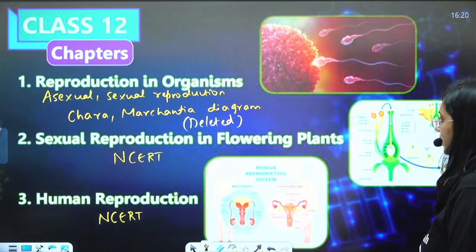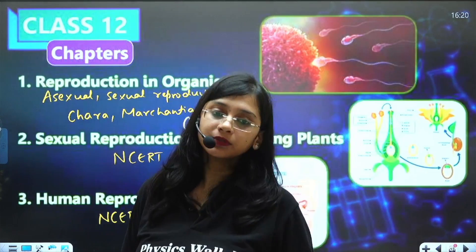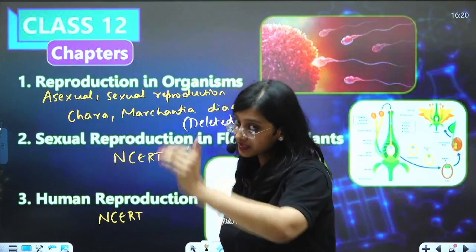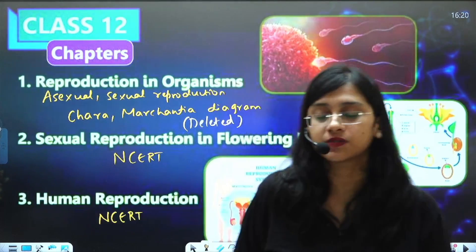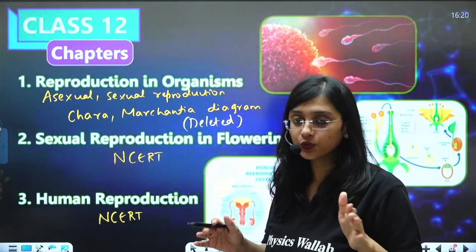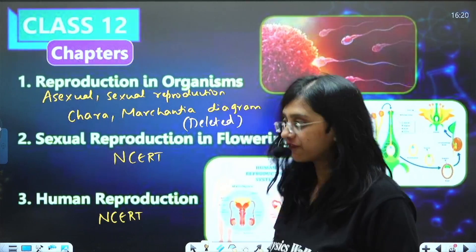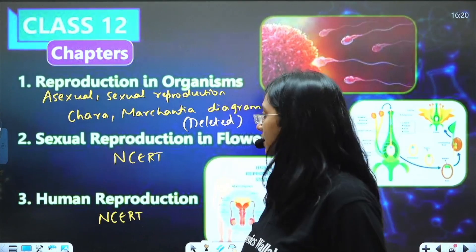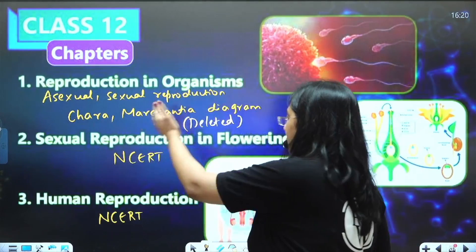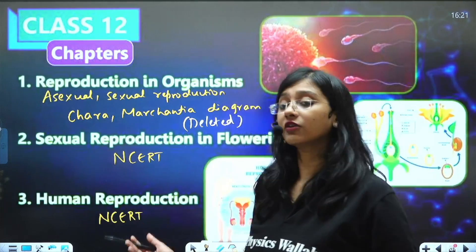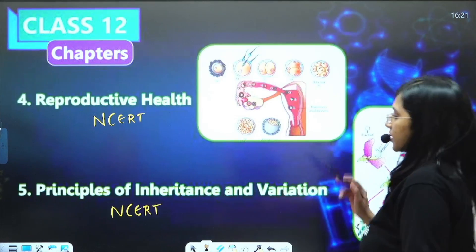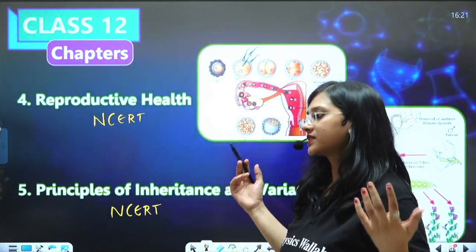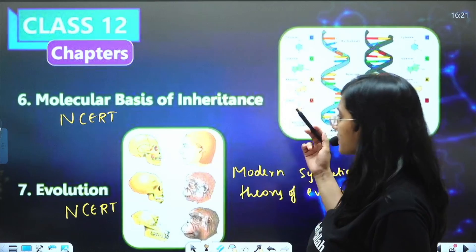Chemical Coordination and Integration — any NCERT works. Moving to Class 12 chapters: Reproduction in Organisms is completely deleted, but study it for understanding other chapters — it includes asexual and sexual reproduction, estrus cycle, and diagrams to mark and share. Sexual Reproduction in Flowering Plants and Human Reproduction — you can use any NCERT for these two chapters. Similarly, Reproductive Health and Principles of Inheritance and Variation — any NCERT.